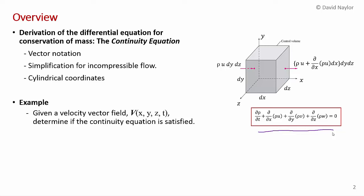Then I'll show how you can simplify the continuity equation — the general form of the continuity equation — for incompressible flows, where density is a constant. And then we'll talk about how to derive this equation in cylindrical coordinates, which is important when analyzing naturally cylindrical objects like flowing pipes. We'll end with an example where I give a velocity vector field V and show how to determine if it satisfies conservation of mass.